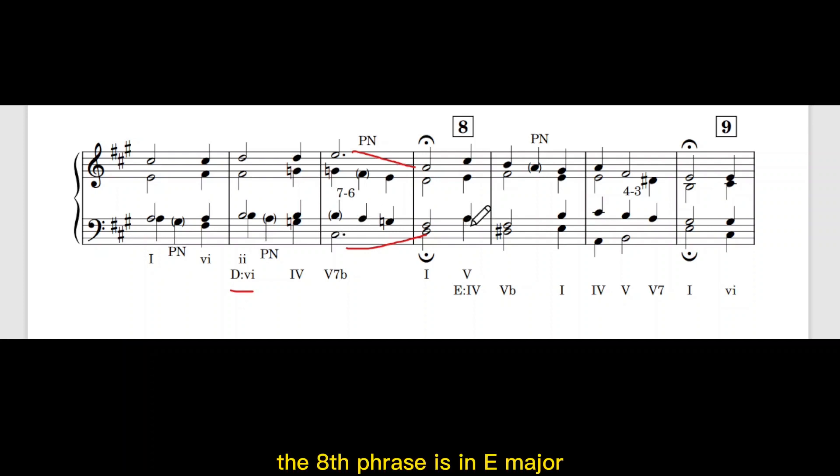The eighth phrase is in E major proved by the D sharp and the perfect cadence. There is a 4-3 suspension used in the alto part. The E is a chord tone from the forecord and then becomes a suspension a 4th above the bass and then resolve downwards to 3. That is the D sharp and a leading note to E major.